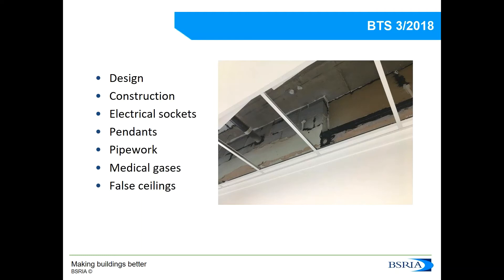We would have to pay attention to and seal things like windows, viewing windows into the isolation rooms, electrical sockets, water pipes, pendants, pipework, and medical gases. When it comes to full ceilings, as you can see here, the air permeability levels will be determined by the envelope area including the area above the full ceiling, unless the full ceiling is completely sealed. What you see in this picture is that we lifted some ceiling tiles and saw that the envelope above the full ceiling needed to be resealed to achieve the necessary airtightness.